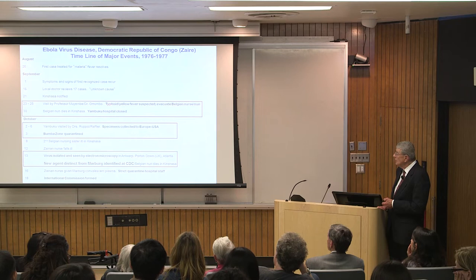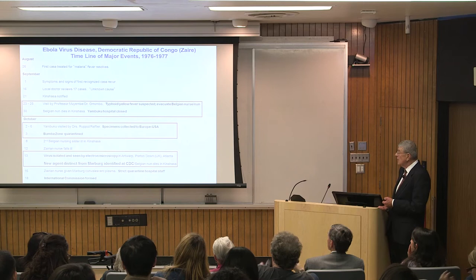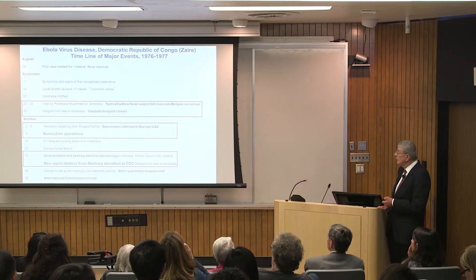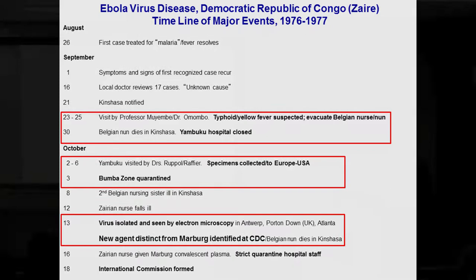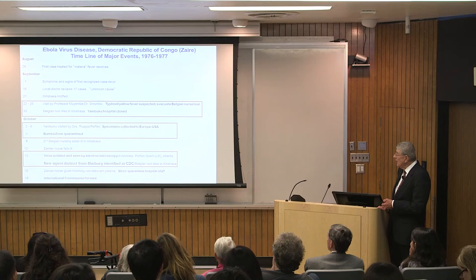Professor Moyimbi — then a younger microbiologist — and another Zairean doctor came up and said this may be typhoid or yellow fever. They gave some immunizations for typhoid and evacuated a Belgian nun who was a nurse there — she was sick — and she came with another nun down to Kinshasa.